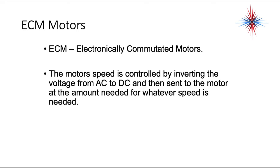With ECM motors, the motor speed is controlled by inverting the voltage from AC to DC and then sending it to the motor at the amount needed for whatever speed is required. With DC motors, we can very easily vary the speed by decreasing the voltage going to the motor. We're going to be seeing more and more ECM motors, and they bring a whole new breed of troubleshooting that's required, so we're going to talk more about those in another video.